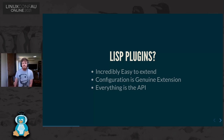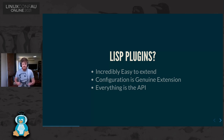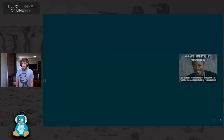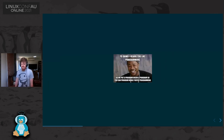A few people looking to start with Emacs go: what plugins do I need for this language? How do I get this set up? The thing is, it's not really plugins. You're genuinely creating an extension to the Lisp environment — you're running code that is equivalent to the rest of the core. You've got to build your Emacs environment to get your Emacs environment.